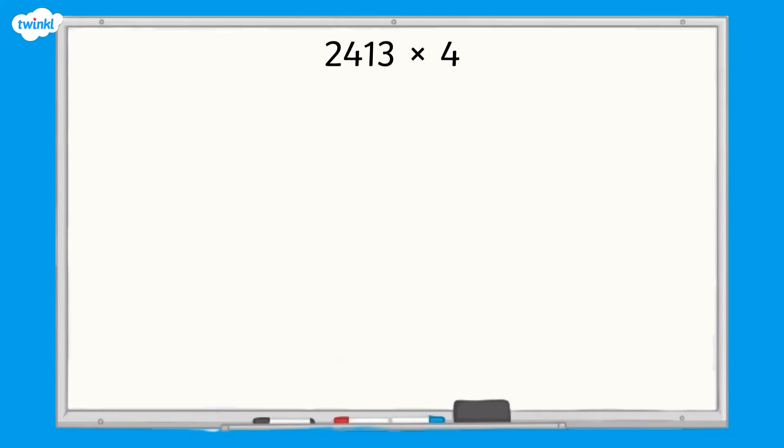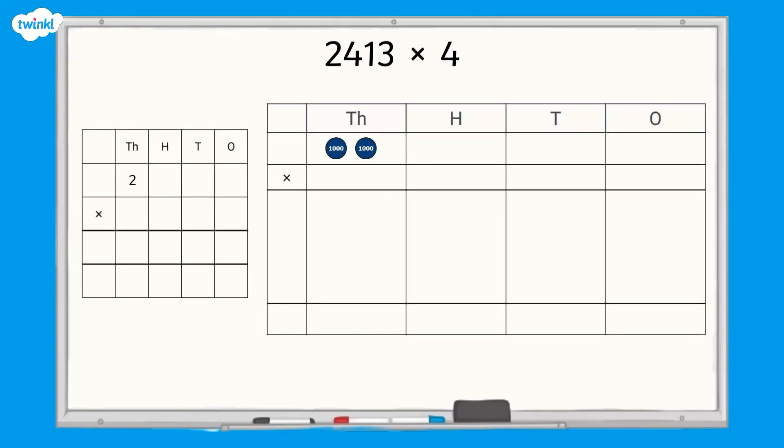When we partition the number, we have two-thousands, four-hundreds, one-ten and three-ones. Our multiplier is four, so we will multiply each part by four, starting with the ones because that is the smallest value digit in our number.